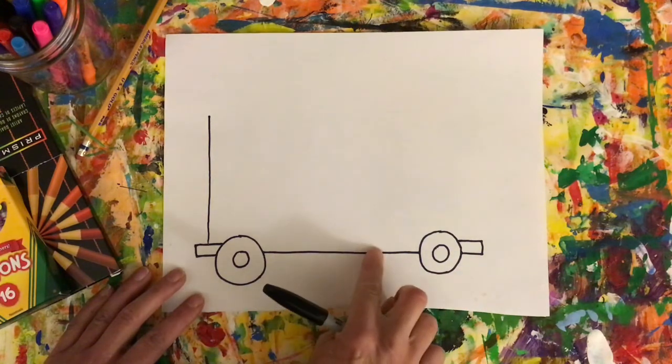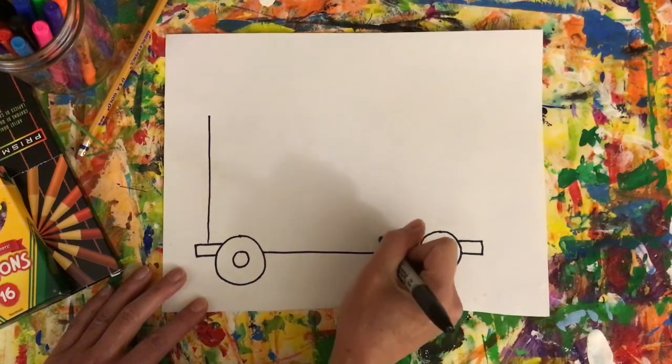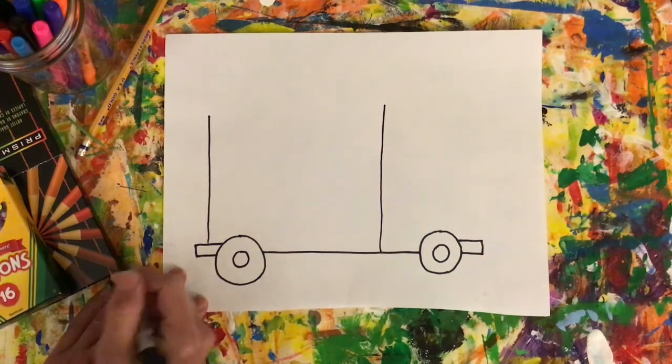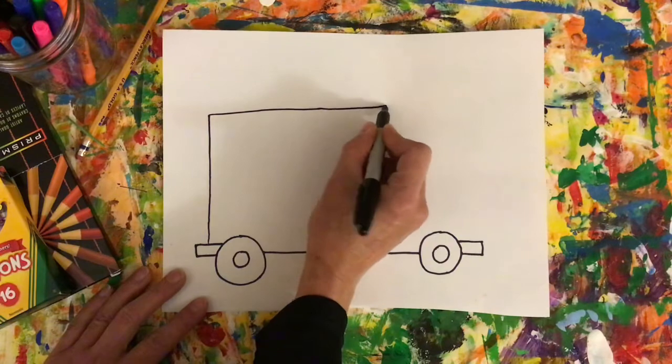So here's the middle, just go a little over towards the engine, bring your vertical line up and then we'll close that line.